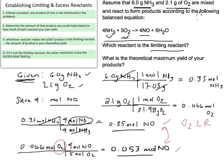Our limiting reactant is the thing that dictates or limits the maximal amount of products you can get. In that same thought process, if O2 is our limiting reactant, NH3 is therefore going to be our excess reactant — that's the thing that's left over. It doesn't get completely used up and doesn't dictate the maximal amount of product for a specific set of conditions.